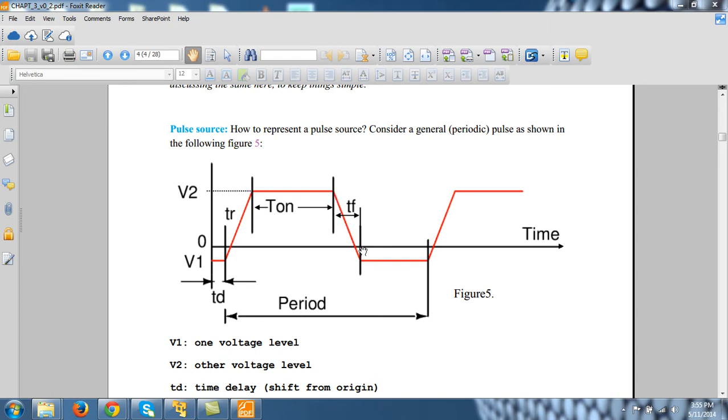Similarly, you have fall time here between these two points, and the time period of this wave is this much. This is all that is a specification of a pulse source and we can define a pulse source like this.